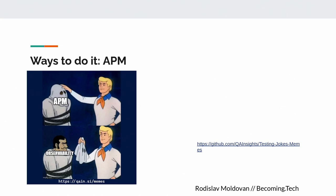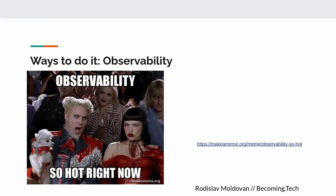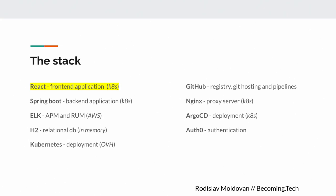Ways to do it: you can use an APM. The APM is basically observability behind the doors. Observability is something very hot right now, in high demand. Lots of people are talking about it, but not everyone is putting it in place. Today we're going to use some of it.